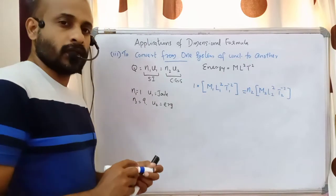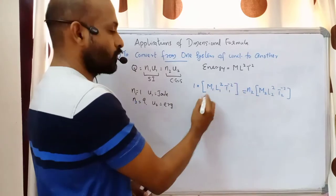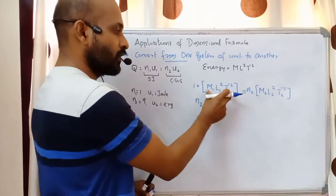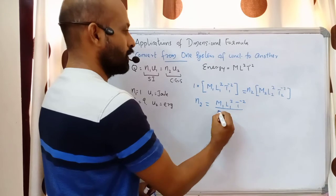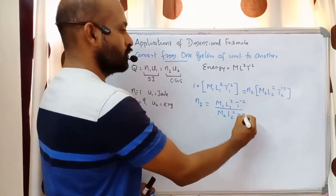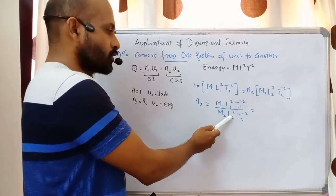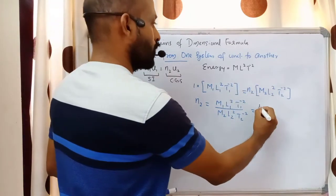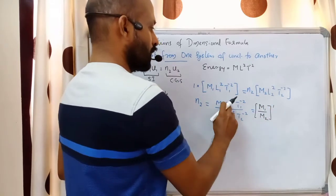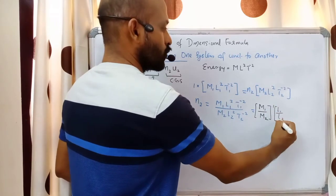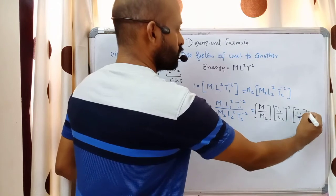We group the terms together — M1 and M2 together, L1 and L2 together, T1 and T2 together. So N2 equals M1 over M2 raised to 1, times L1 over L2 raised to 2, times T1 over T2 raised to minus 2. Now we will substitute the actual unit values for M1, M2, L1, L2, T1, and T2.